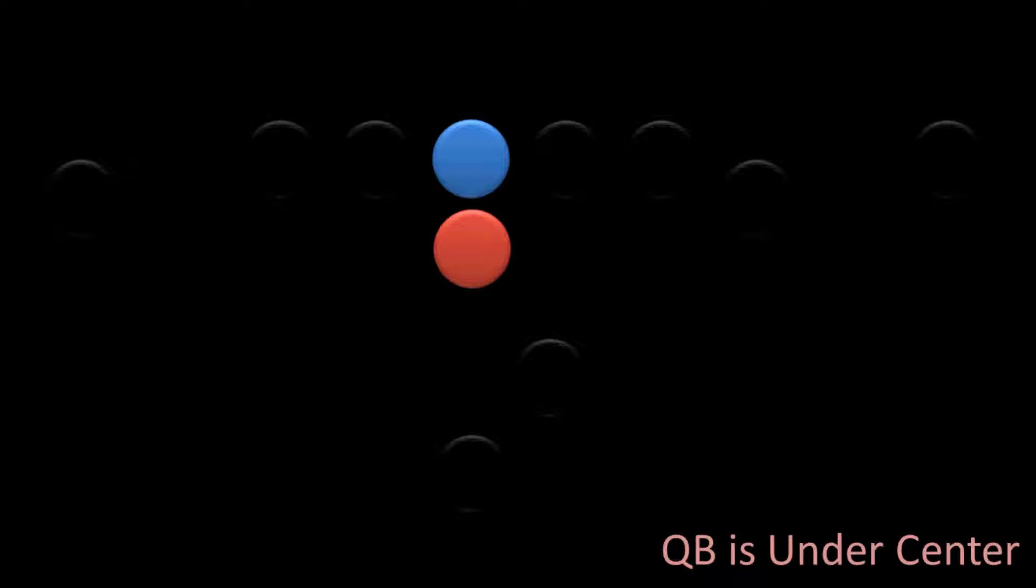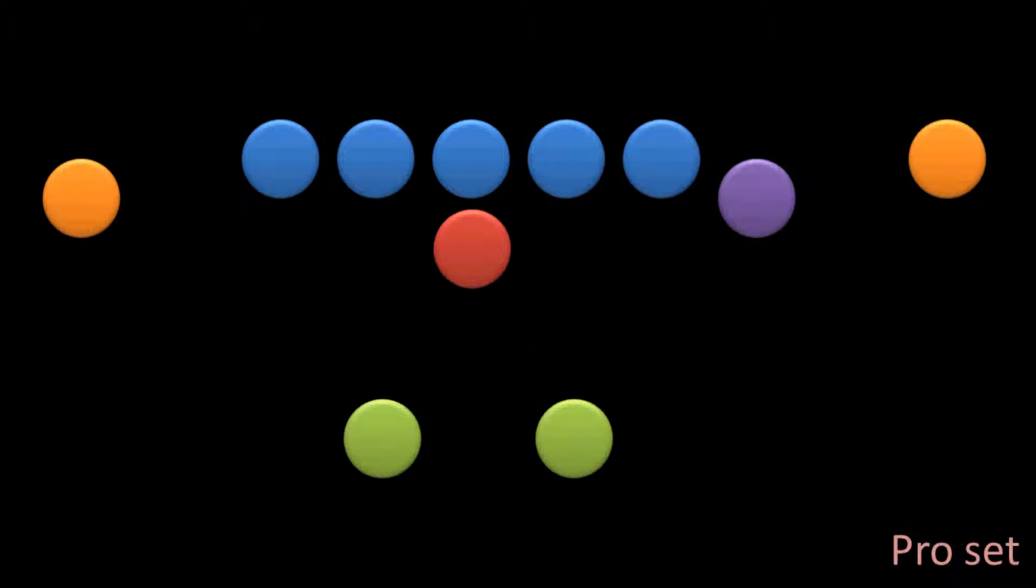But right now let's look at another formation that's pretty similar to the I formation, and this is called the pro set formation, which is similar to the I formation, except that the running backs are positioned to either side of the quarterback in the backfield. And again, we can have a variation on this where the wide receivers are shifted, or even line up one way, and then go in motion before the play.